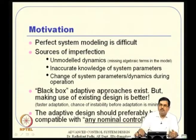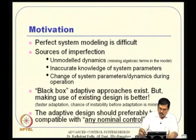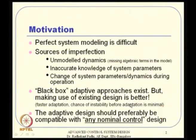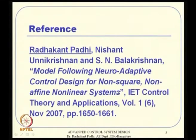The nominal control will have some robustness based on the nominal model — we call that nominal control — and we are interested in improving its robustness. As we go along, we identify the unknown part and use it for updating the controller. The adaptive design should preferably be compatible with any nominal design. This work is largely from our own research team, reported in the IET Control Theory and Applications journal in 2007. I will roughly take you through an earlier version and then toward the end of the lecture tell you what actually exists in that paper.